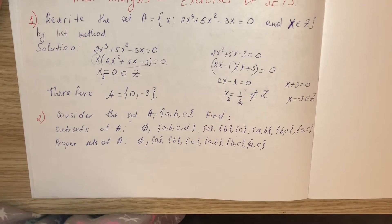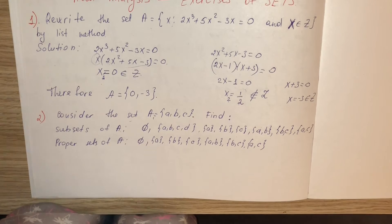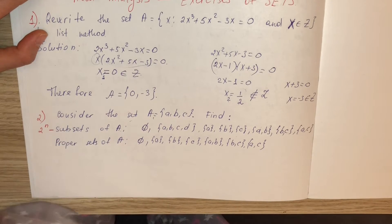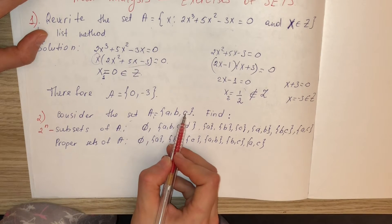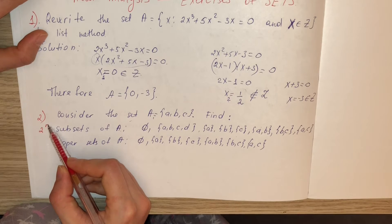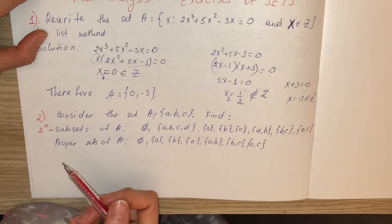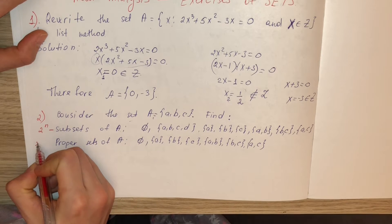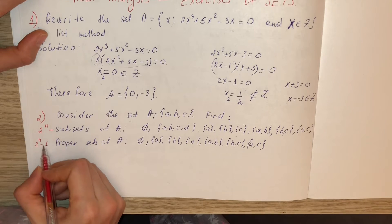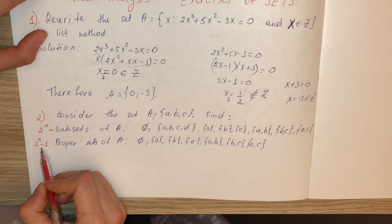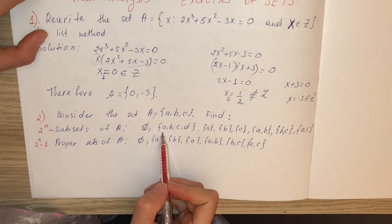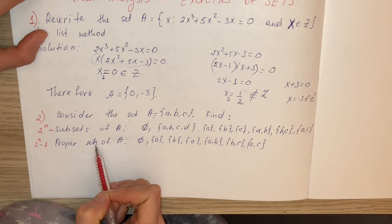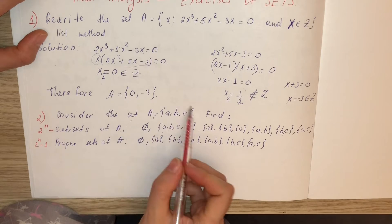The number of proper subsets is 2ⁿ − 1. Here, that is 2³ − 1 = 7. If we cancel out the set itself, we get 7 proper subsets. The proper subset is the subset that does not include the main set itself.